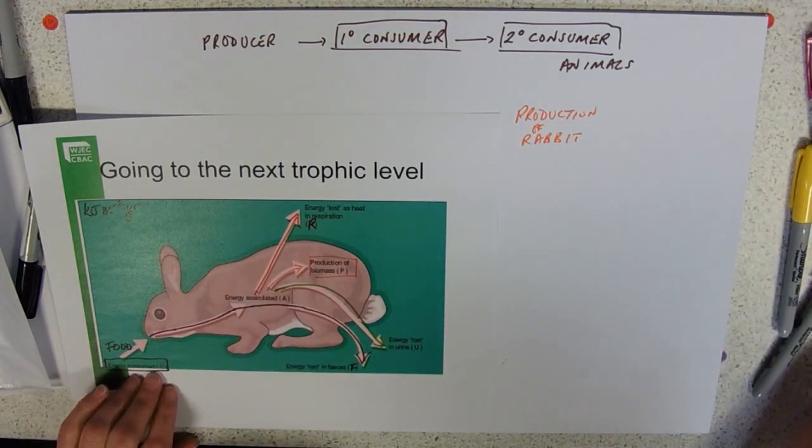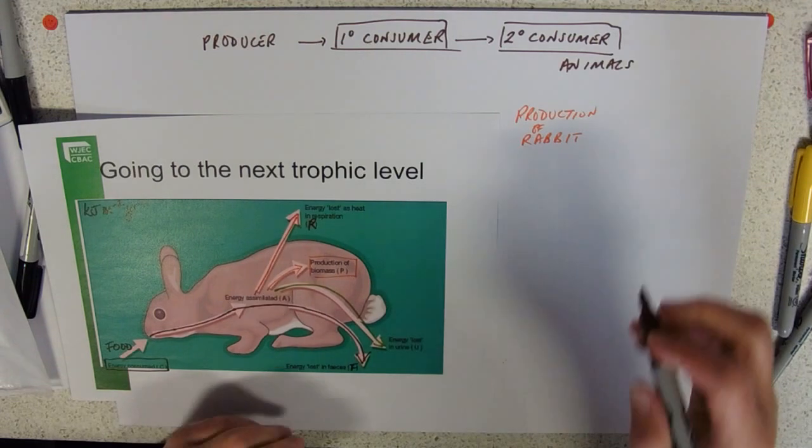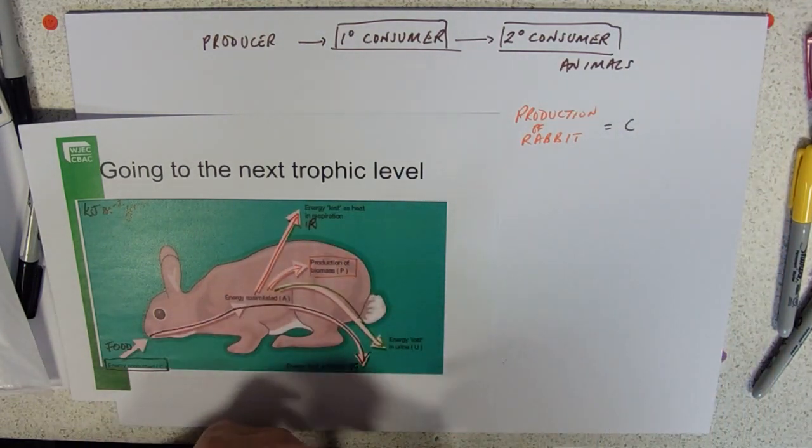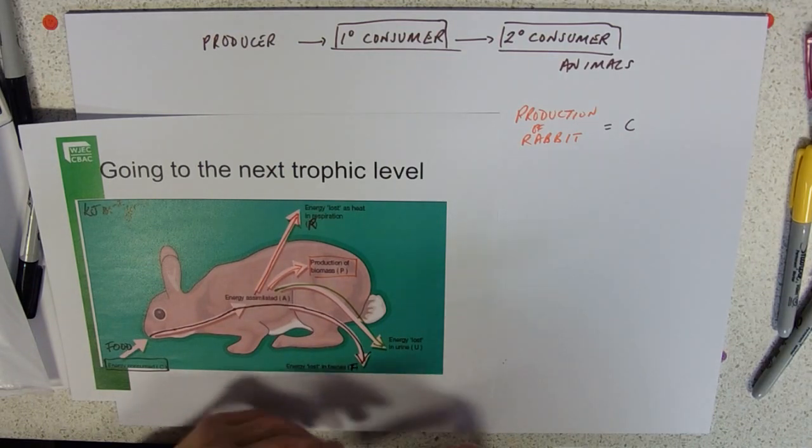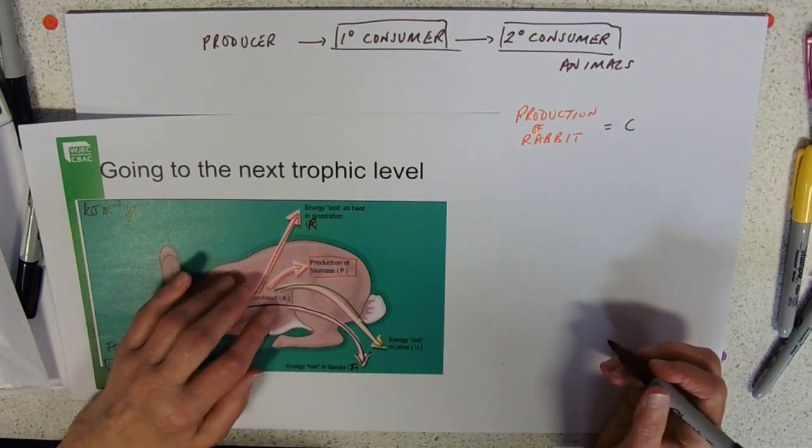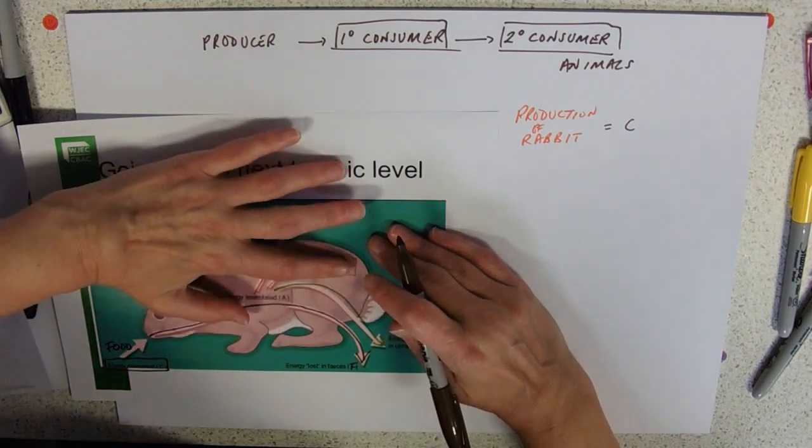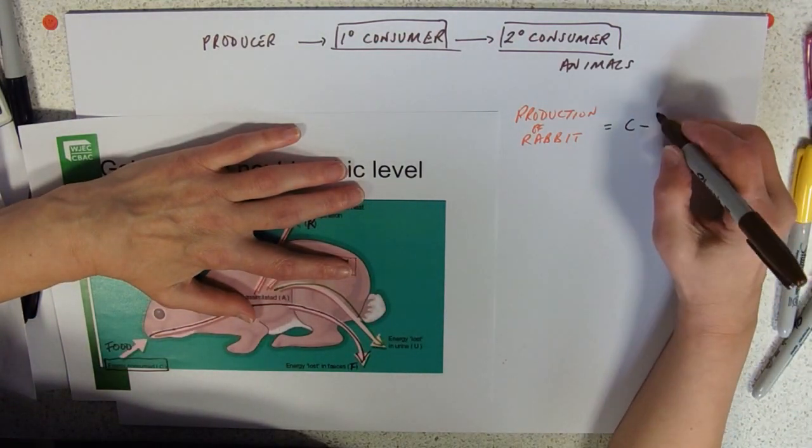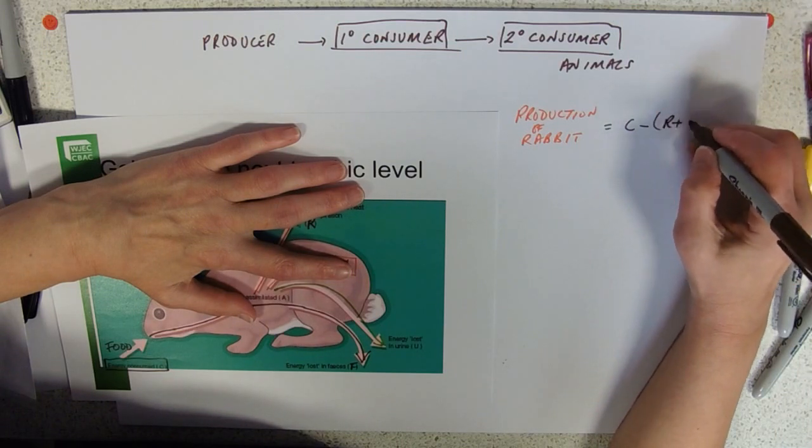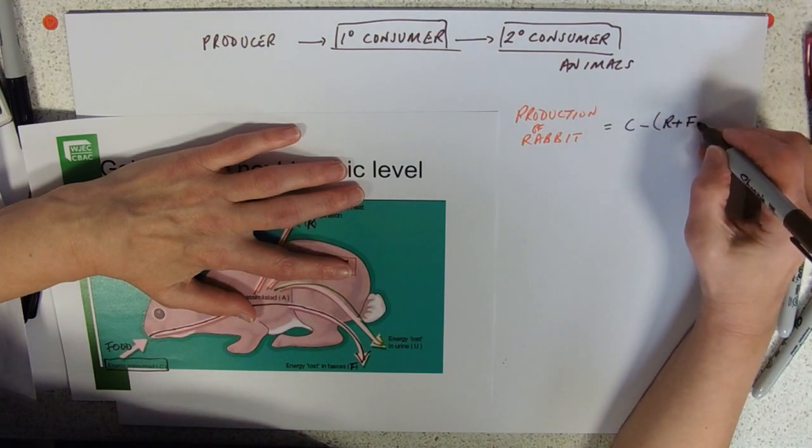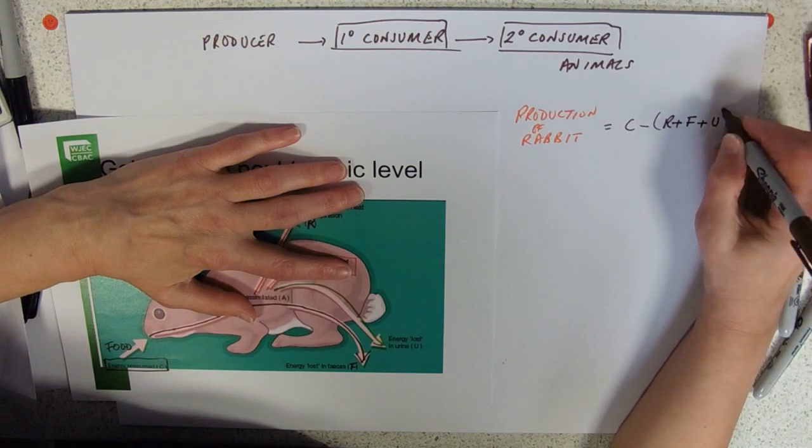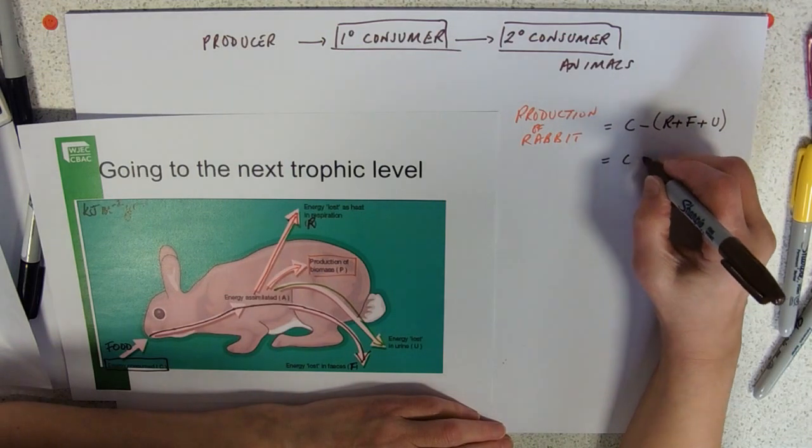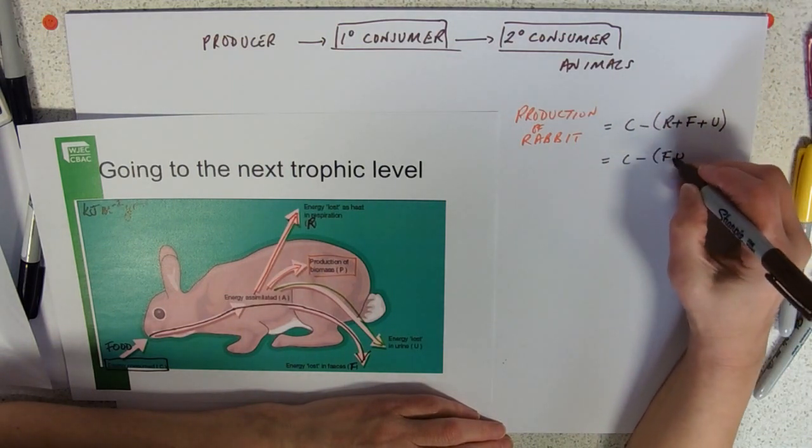We need to take in food consumed and then take off all the things that it is used for. What is it used for? It's used for respiration, some of it's lost in faeces, and some of it's lost in urine.